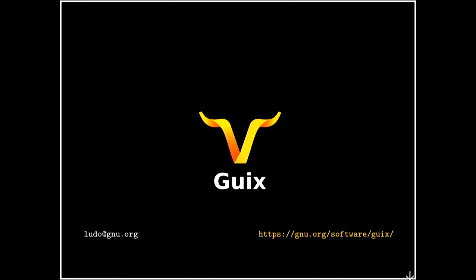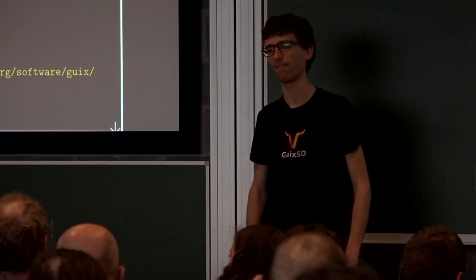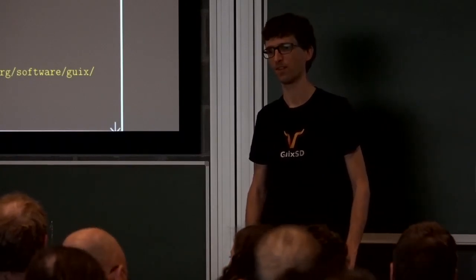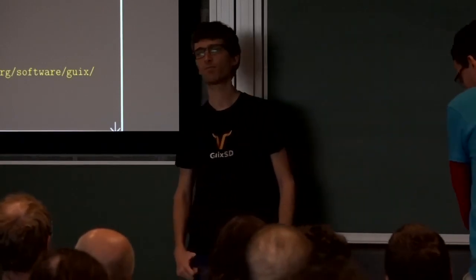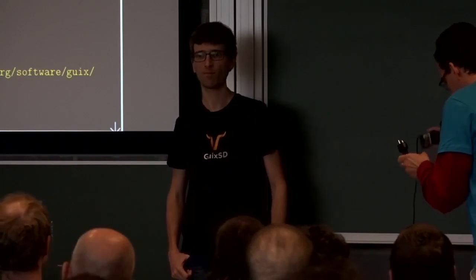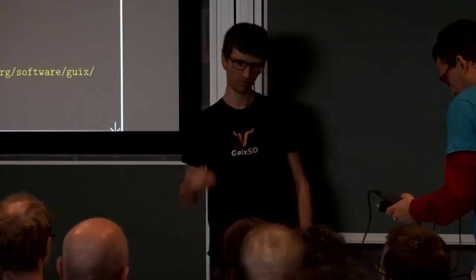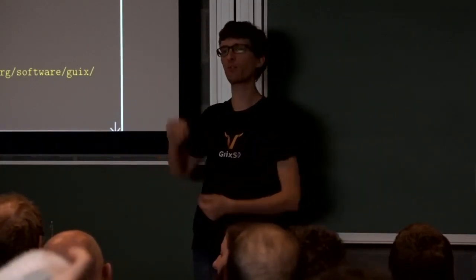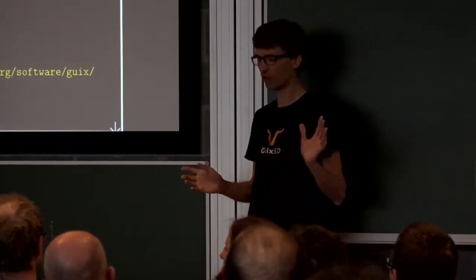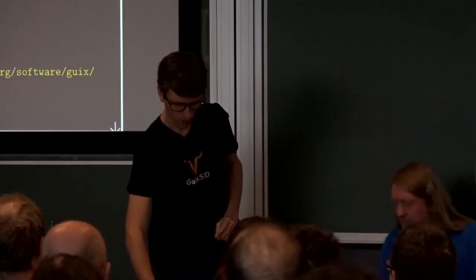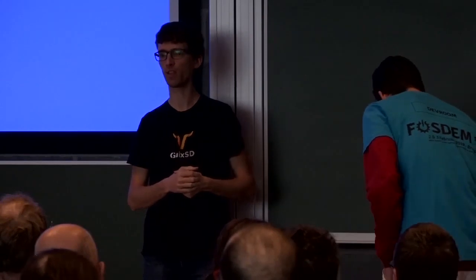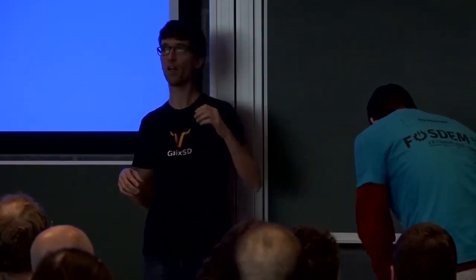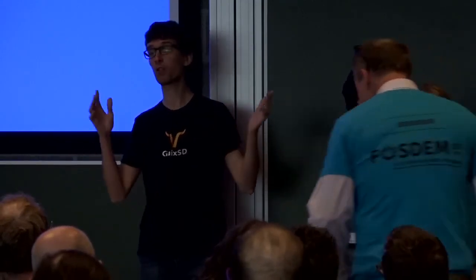Q&A: How does configuration generation work behind the scenes? Is it templating of configuration files, or something smarter? The answer is: in many cases the configuration file format is a key-value thing, so we have a generic system that defines bindings for that type of configuration file and automatically takes care of generating it. We also have more ad hoc ways of generating special configuration files.